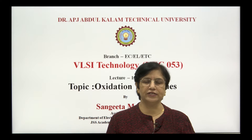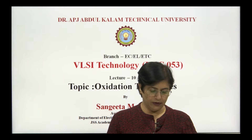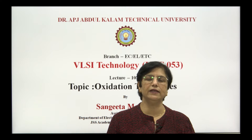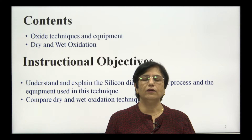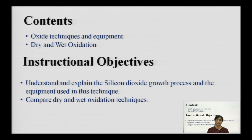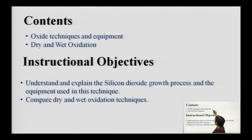The topic for this lecture is Oxidation Part 2. In the first lecture on oxidation, we studied the growth kinetics and the different functionalities served by the oxide layer — that is the reason behind selecting silicon as the most preferred material in the integrated circuit industry. Today's lecture covers oxide techniques and the equipment used for oxide growth, and the difference between dry and wet oxidation, which are the two common methods of oxide growth.